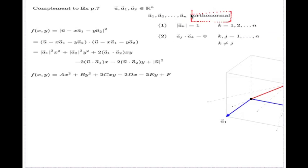A typical example of an orthonormal family of vectors is the standard basis vectors — those which look like (1,0,0,0), (0,1,0,0), (0,0,1,0), and so on — vectors which have all zeros except a one in one particular position. That is the typical example of an orthonormal system of vectors.